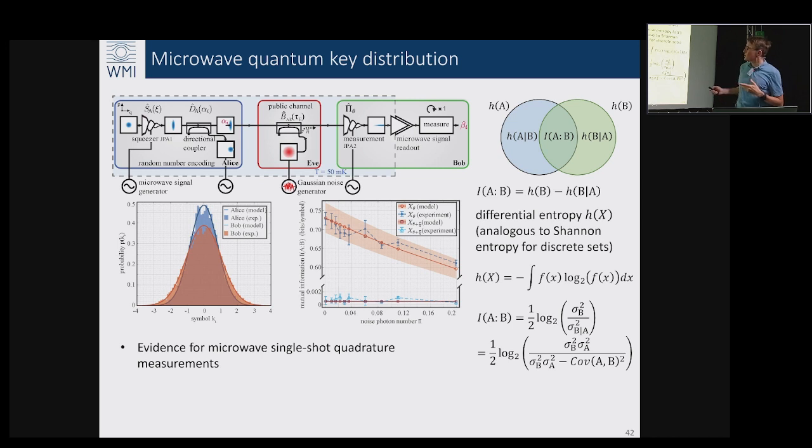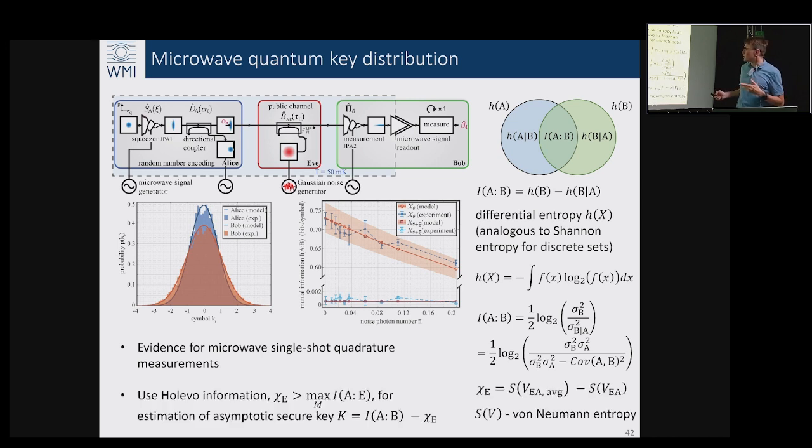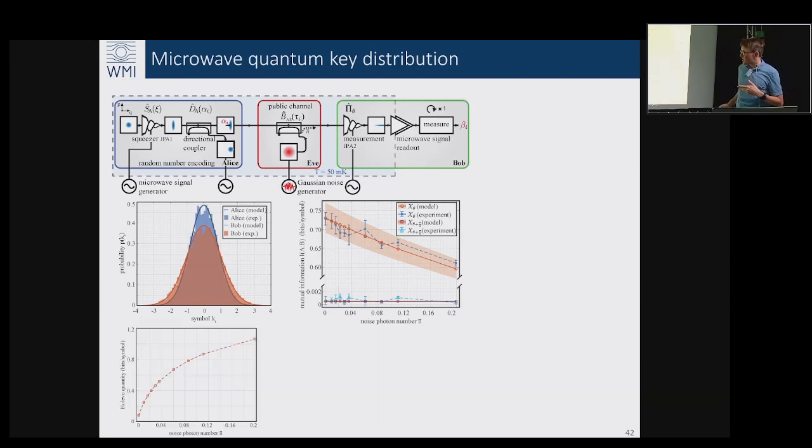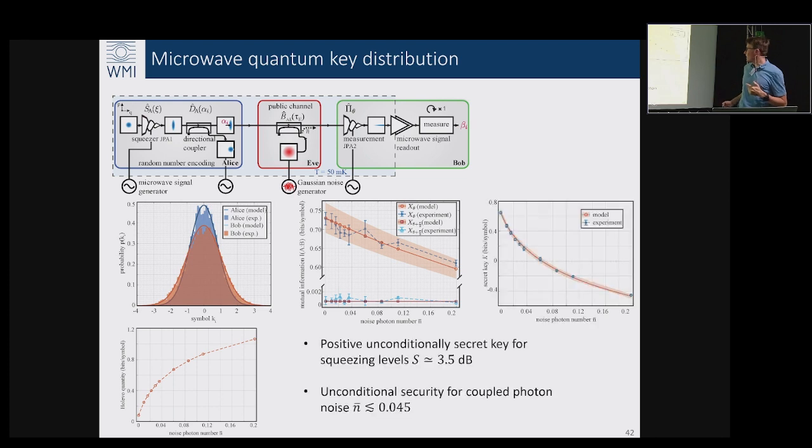In order to understand whether this key protocol was secure or not you have to compare this mutual information to the information which is leaked to Eve. For that we have to use the so-called Holevo information which can be calculated based on the full tomography of our protocol and using the von Neumann entropy. Effectively then the graph extracted from the experimental data looks like it is shown here.